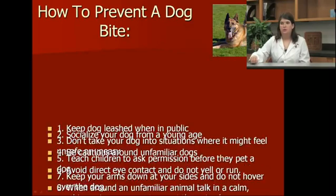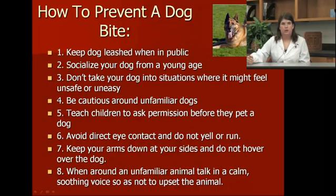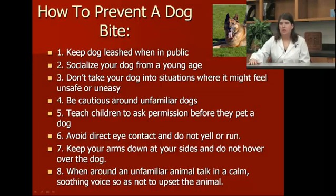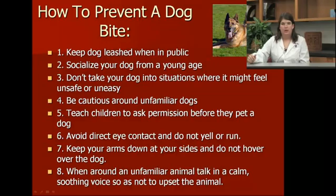How to prevent a dog bite: when in public, if it's your dog, keep them on a leash. Make sure they're well socialized and used to being around other people and dogs. Don't take your dog into situations where they might feel uneasy or uncomfortable. Be cautious around unfamiliar dogs. Always ask permission before petting anyone's dog. Avoid direct eye contact and do not run or yell at the dog. Keep your arms down at your sides and don't hover over the dog. When around an unfamiliar animal, speak in a calm voice so you don't upset it, and once you've got permission to pet it, then go ahead.